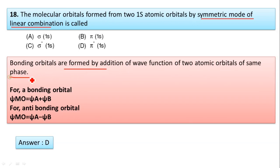Symmetry means same phase. For a bonding orbital, that is σ MO, ψₐ + ψᵦ—one atomic orbital is ψₐ and another atomic orbital is ψᵦ. For anti-bonding orbital it is ψₐ - ψᵦ. So answer D is correct.